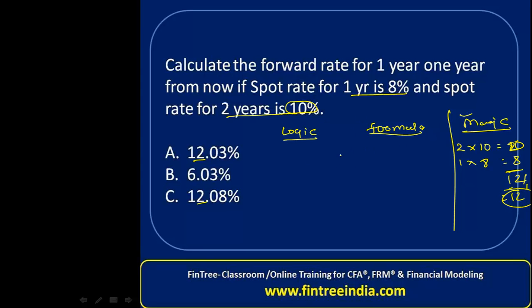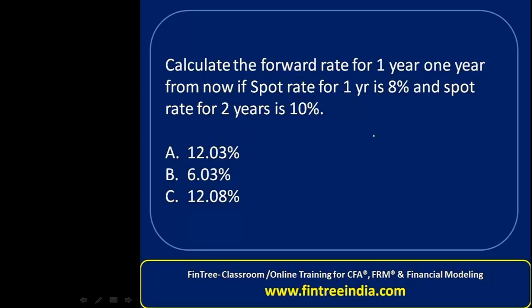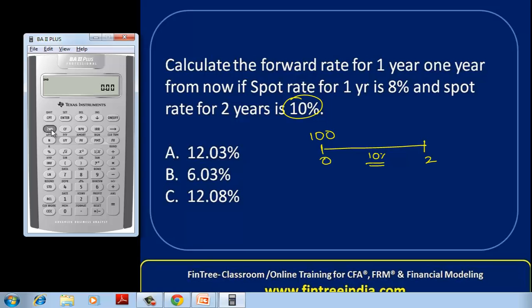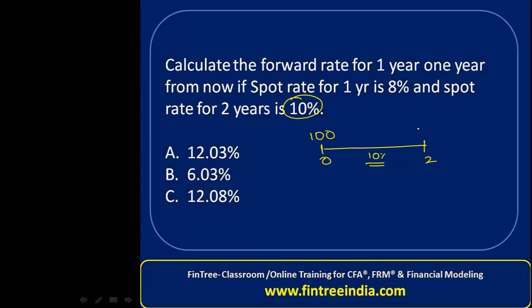Using the logic method, build a simple timeline from time 0 to time 2. Imagine you invest a hypothetical 100 rupees at the spot rate of 10% for two years. Using the Texas Instruments calculator: 100 present value, N=2, I/Y=10, compute future value — the amount at the end of the second year is 121.